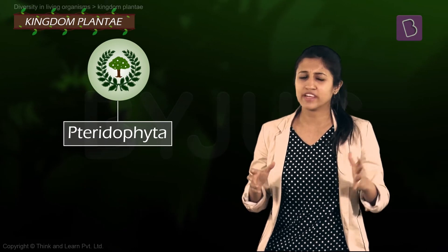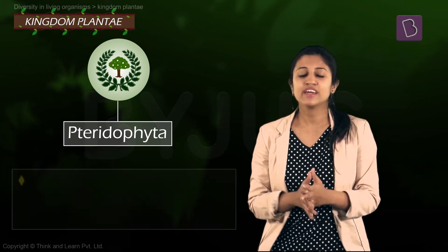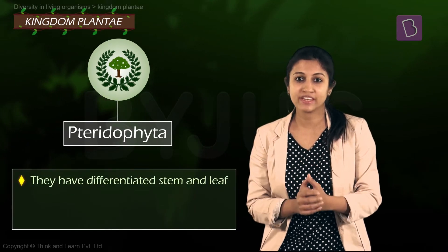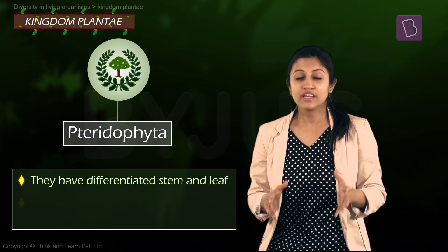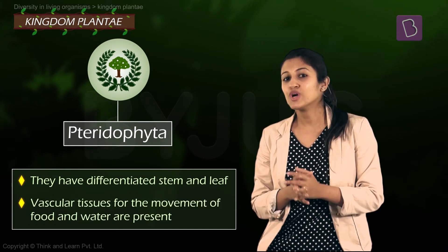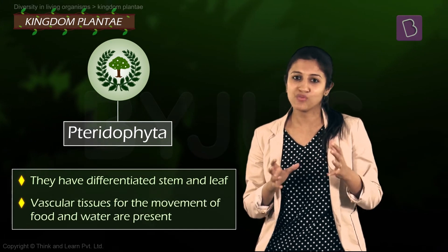The next group, the Pteridophytes — leaves, roots, stems, they can be clearly seen. They are clearly differentiated and, most importantly, they now have conduction pathways for food and water.